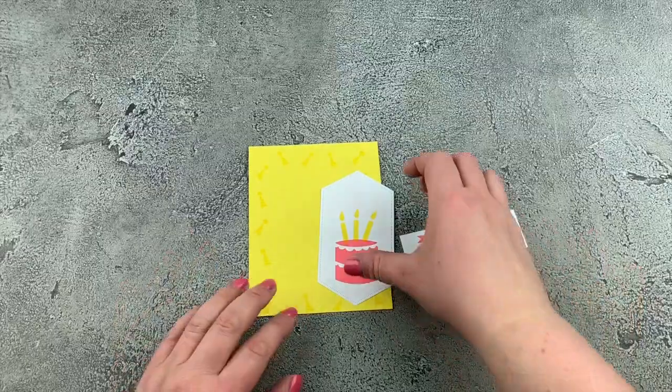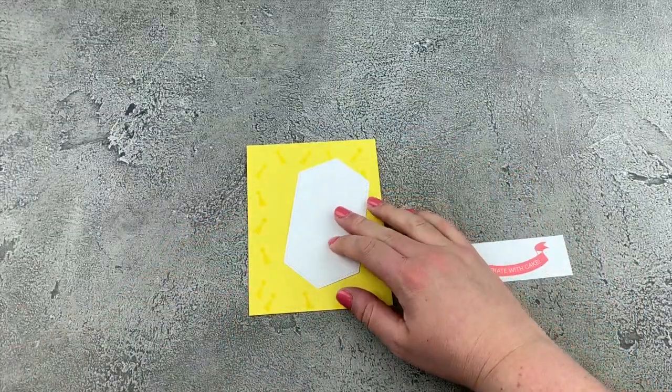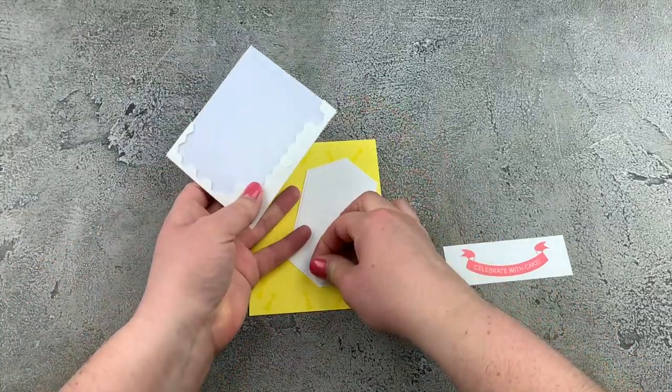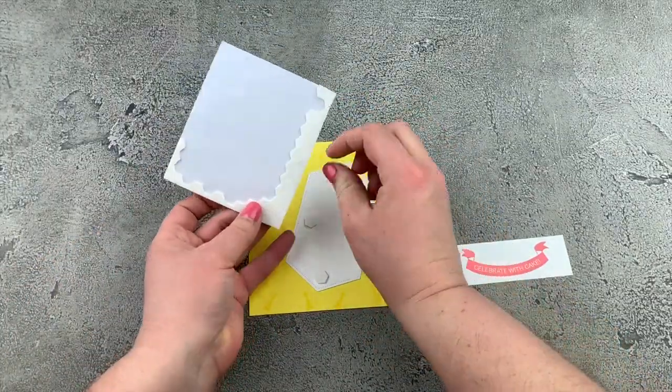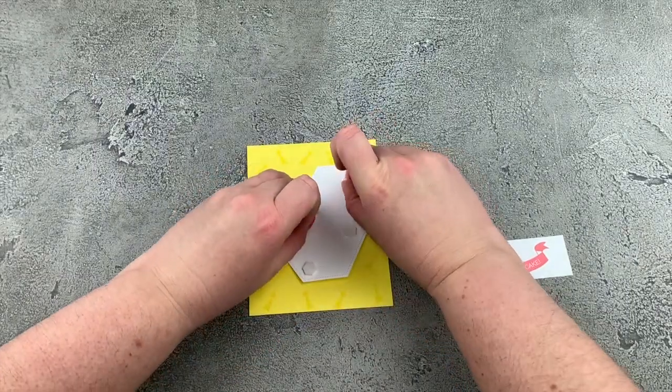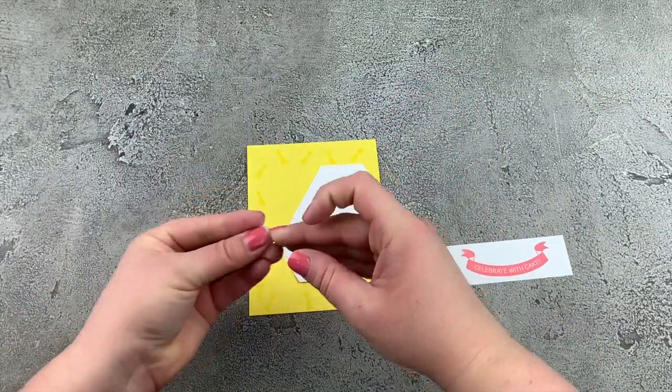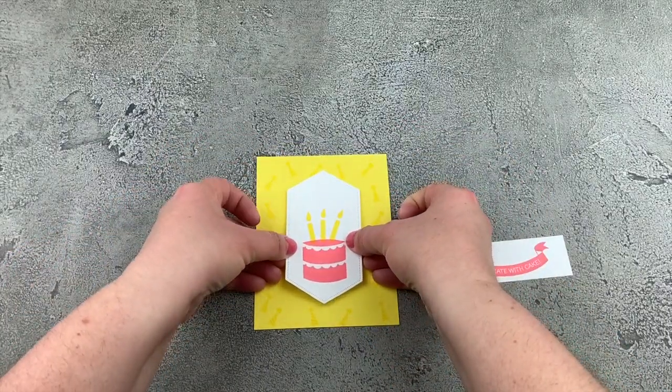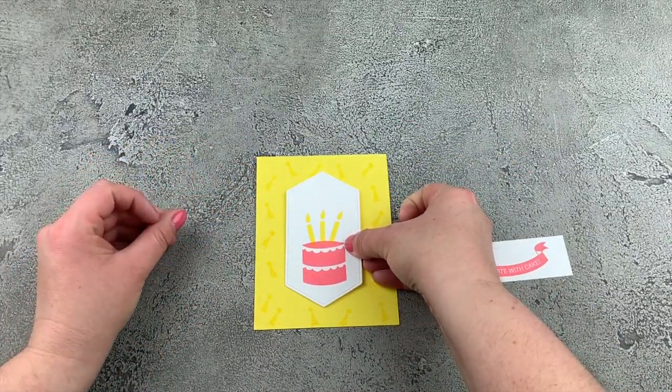And now we can start assembling. I'm going to take my dimensionals and put them on the back of my label piece. There we go. All right, so we can center that. And then, of course, our party hats are framing that nicely.